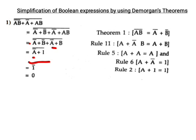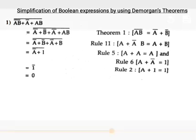So A complement plus A complement equals A complement. Also, A plus A complement equals 1, so 1 complement equals 0.